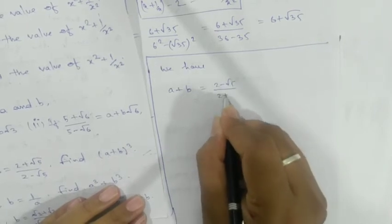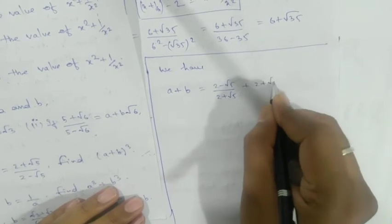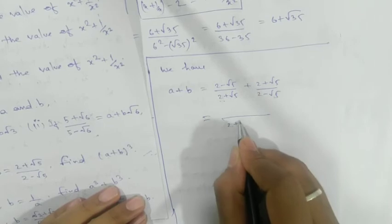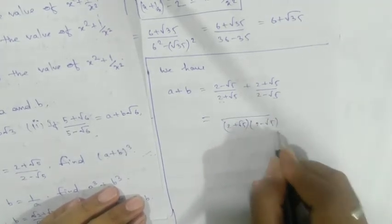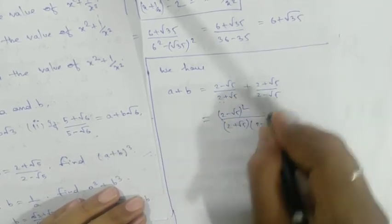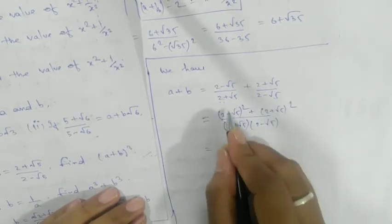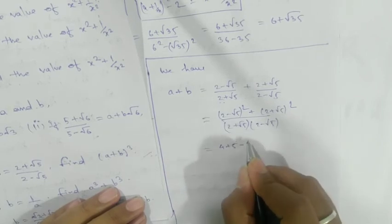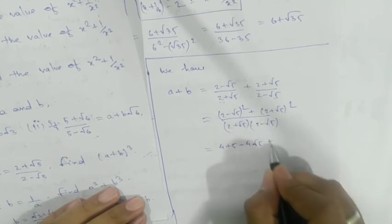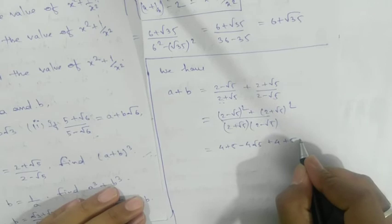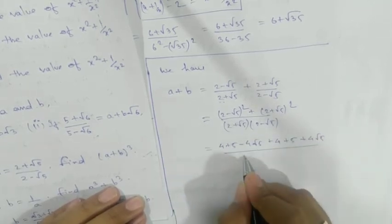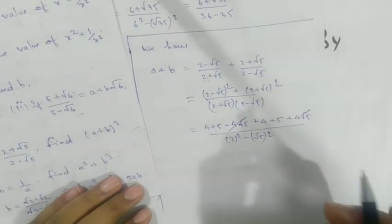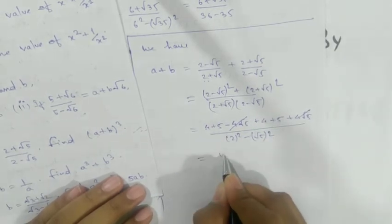Next problem: simplify (2 - √5)/(2 + √5) + (2 + √5)/(2 - √5). Take the LCM of the denominators: (2+√5)(2-√5). Cross multiply — numerator becomes (2-√5)² + (2+√5)². Expanding: (a-b)² + (a+b)² = 2(a²+b²) = 2(4+5) = 18. Denominator: (2+√5)(2-√5) = 4-5 = -1.